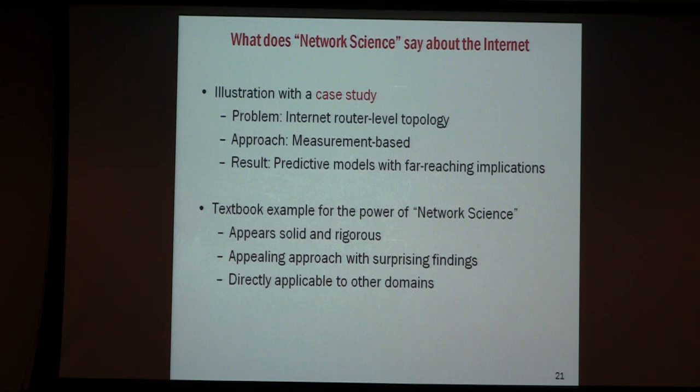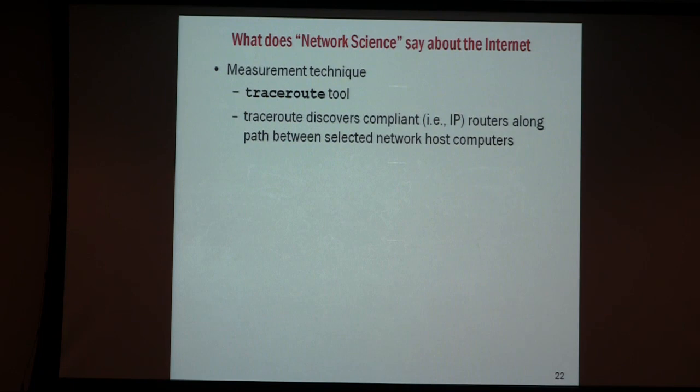That should already raise a question mark, because the internet is not like a technology network and it's not like a social network. Where do the data come from? We have the well-known traceroute tool that all of us can run and collect data. The question is how many places on the internet you can trace to — the more friends you have, the more you can trace to.